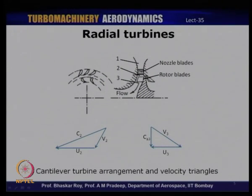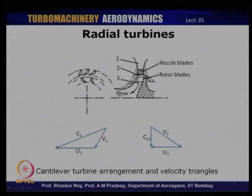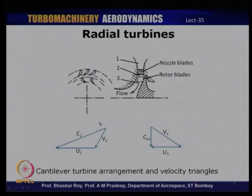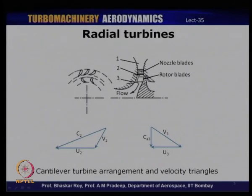There are two distinct views: the front view showing the nozzles and rotor blades. The nozzle blades accelerate the flow and discharge it through the rotor blades, and the flow leaves the turbine axially. Station one is the nozzle entry, station two is the nozzle exit and rotor entry, and station three is the rotor exit.